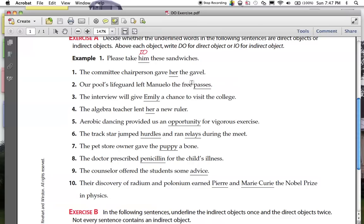Alright, for number one, the committee chairperson gave her the gavel. That is an indirect object. Gavel is the direct object of what was given. Who was given to the gavel? Her.